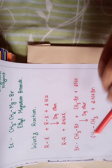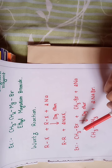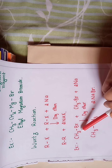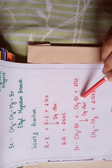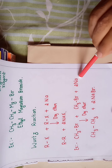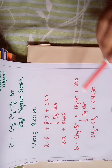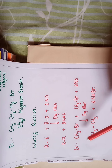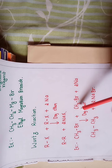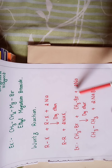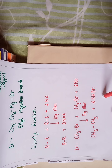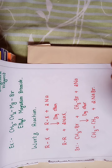For example, taking the simplest alkyl halide — methyl bromide or bromomethane — two molecules of methyl bromide are treated with sodium metal in the presence of dry ether. The two methyl groups combine to form the higher alkane ethane, along with the liberation of sodium bromide. This is the Wurtz reaction.